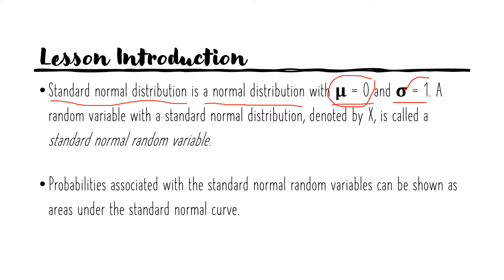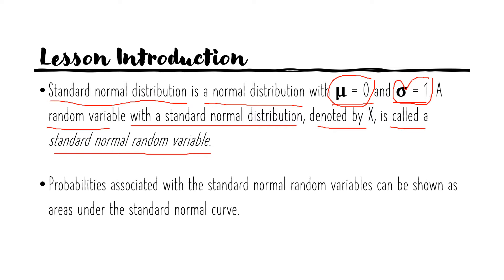When dealing with the standard normal distribution, you are dealing with a population mean equal to 0 and a standard deviation equal to 1. A random variable with a standard normal distribution, denoted by Z, is called a standard normal random variable. We simply use the letter Z to represent variables in the standard normal distribution.